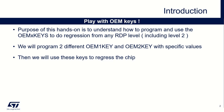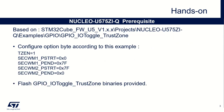First, let's check together the setup we will use. For this hands-on, we will use a Nucleo U575ZDQ and the GPIO toggle TrustZone code example delivered in the STM32U5. This is a TrustZone application which does some LED blinking from secure and non-secure applications. In the material of this hands-on, we provide pre-compiled binaries. We need to activate the TrustZone and configure the first bank of flash as secure and the second bank as non-secure thanks to option bytes.